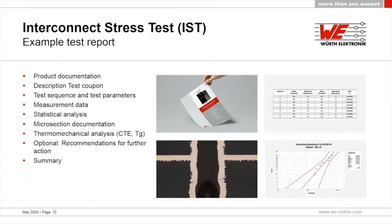The statistical analysis is shown as a Weibull diagram, which allows you to see not only the individual failure points in tabular form but also what the overall performance looks like statistically. Additionally, the thermomechanical analysis is included, optional recommendations are provided, and a short summary gives you the most important milestones and information.